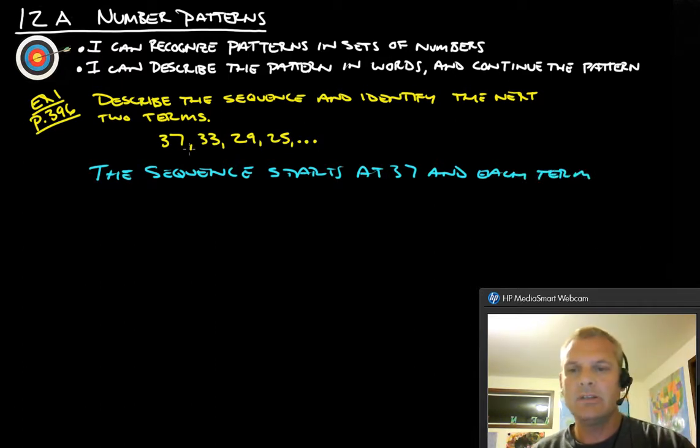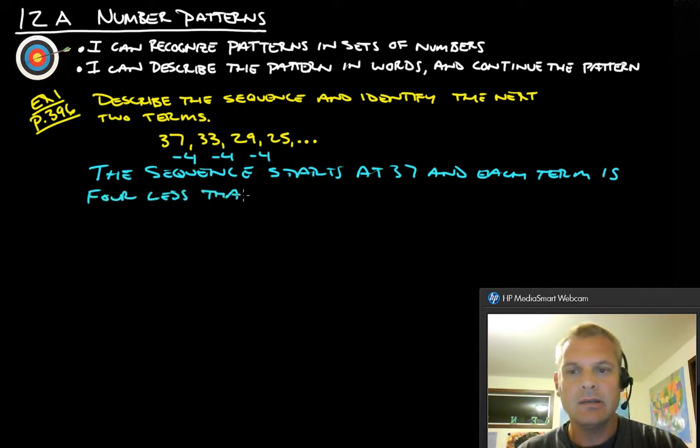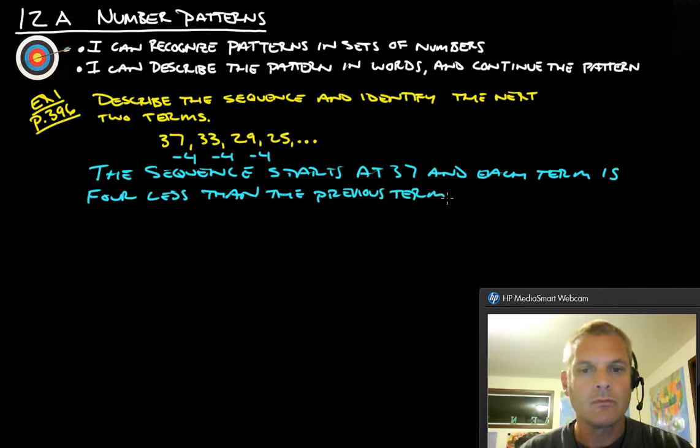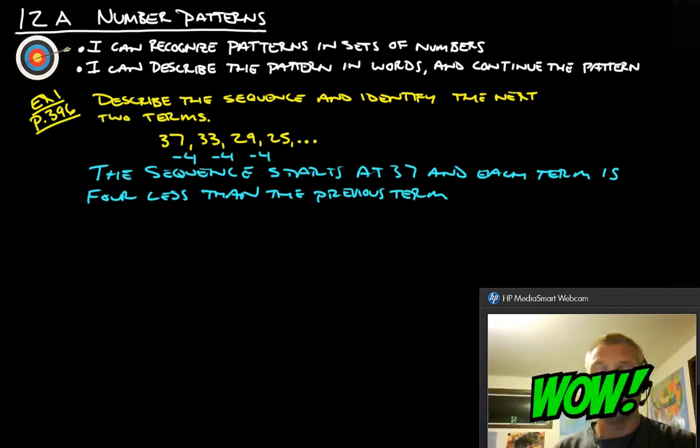So each of these terms here is subtracting 4. 37 minus 4 is 33, 33 minus 4 is 29, 29 minus 4 is 25, so then we can say each term is 4 less. Okay, so that's really all there is to that, so that's fantastic, isn't it?